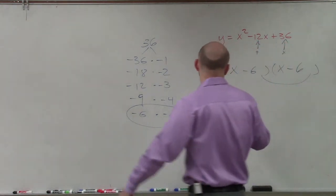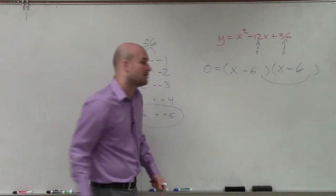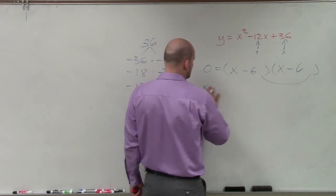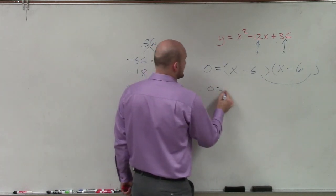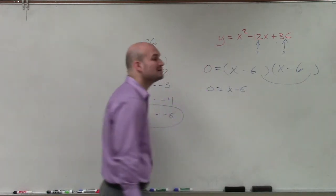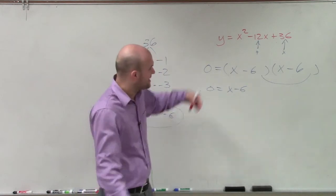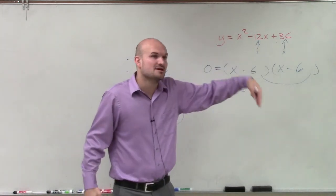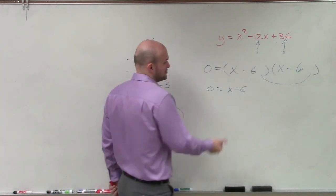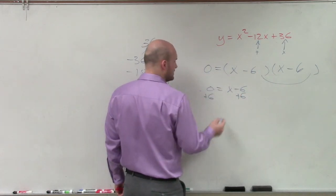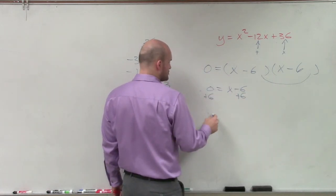Now I can apply either the zero product property or the square root method. In this case, I'll just use the zero product property. So I'll say 0 equals x minus 6. Notice these are duplicates, so you don't have to solve them twice. Let's just be concerned with solving, and you only need to do it once since it's repeated.